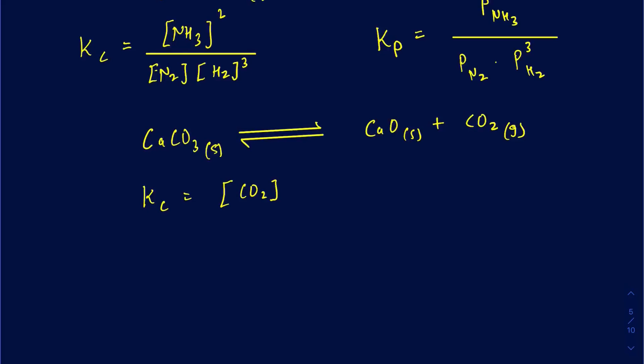How would the Kp look for this equation? When doing Kp, you only include gases, because only gases have pressure. You're not going to get any pressure from solids, liquids, or even aqueous solutions. So the Kp is just going to be the partial pressure of CO2, and that's it.